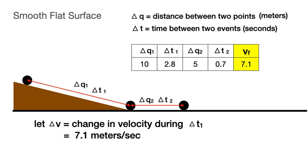Let delta v equal the change in velocity during the time interval delta t sub 1. Since the initial velocity is zero, delta v equals 7.1 meters per second.